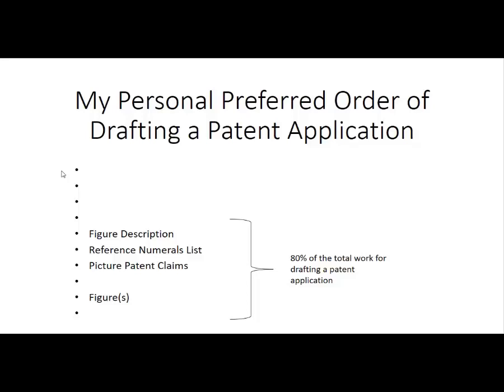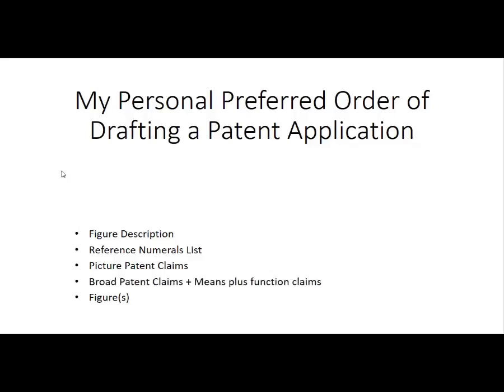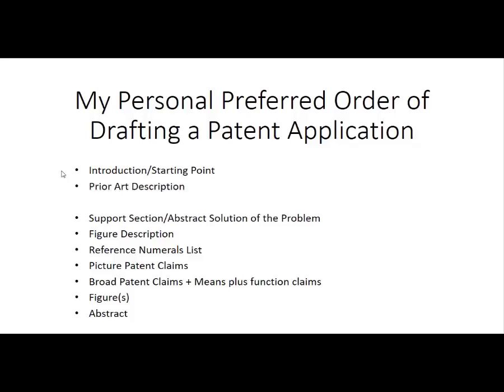After that is done, a patent attorney would add broad patent claims and means plus function claims, the introduction starting point, and also the abstract. Then the patent attorney would add the support section or the abstract solution of the problem. The prior art description is quite mechanical and can also be done by a robot. And the patent attorney again adds a problem which is solved by the invention.